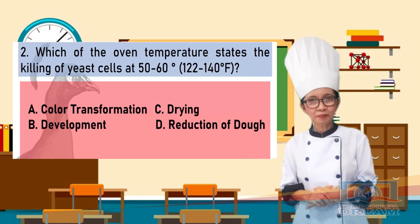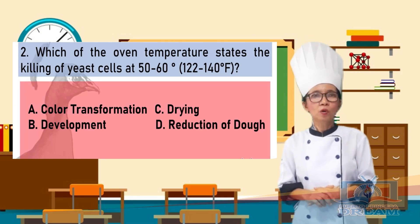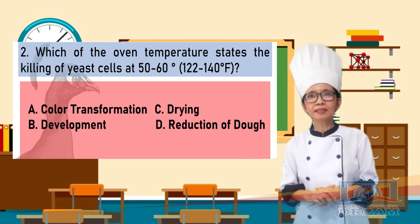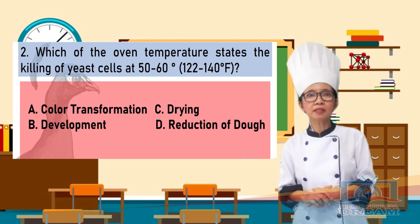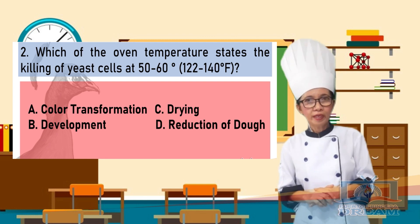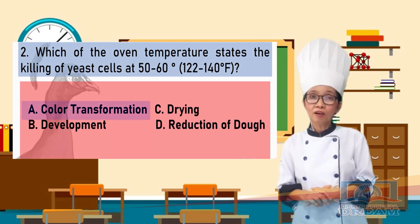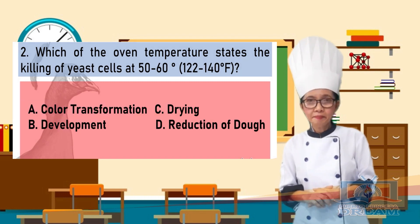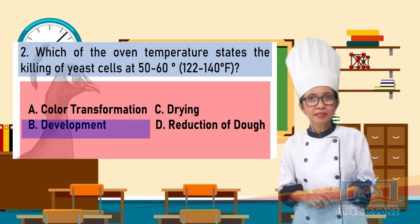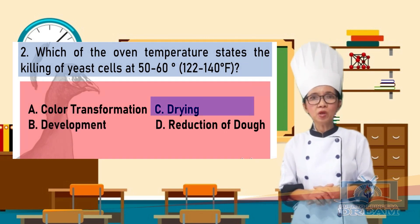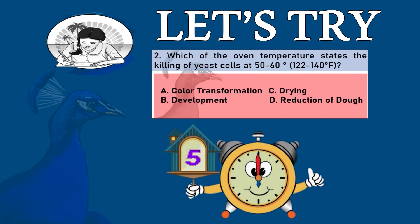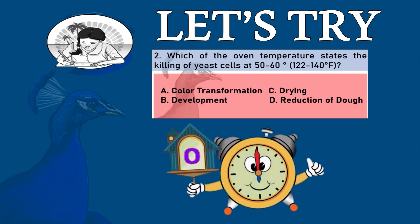Let's go to question number 2. Which of the oven temperature stages describes the killing of yeast cells at 50 to 60 degrees centigrade or 122 to 140 degrees Fahrenheit? A. Color transformation, B. Development, C. Drying, D. Reduction of dough. Time is up!